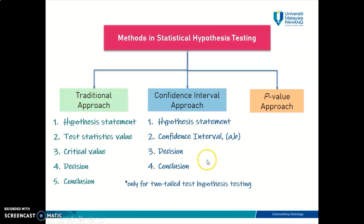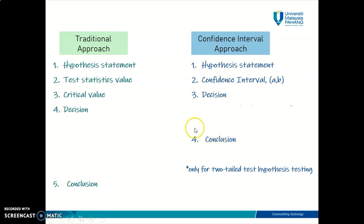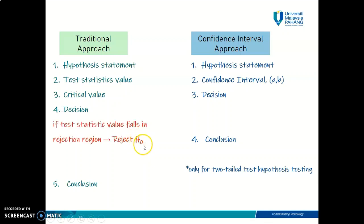Let's talk about how to make a decision using the confidence interval approach. I'm going to make a comparison between the traditional approach decision making and the confidence interval approach decision making. Previously in the traditional approach, how do you decide whether or not to reject H-null? It's based on your test statistic value — if your test statistic value falls in the rejection region, you will reject H-null.